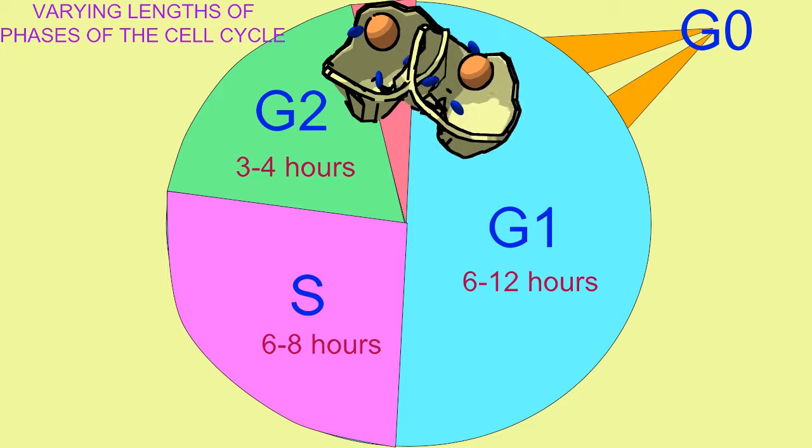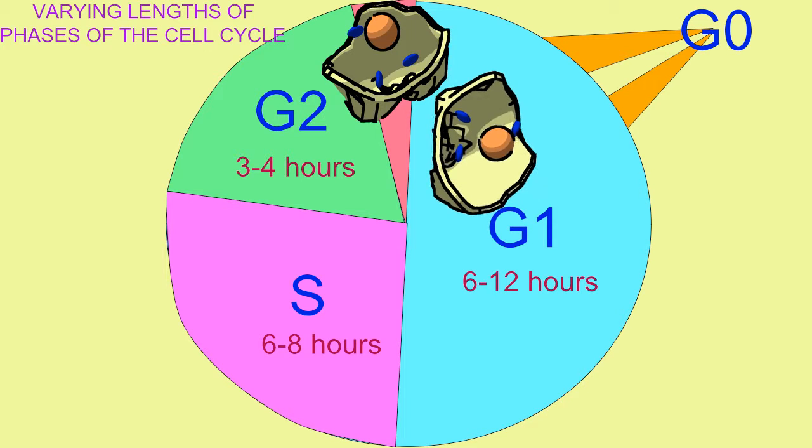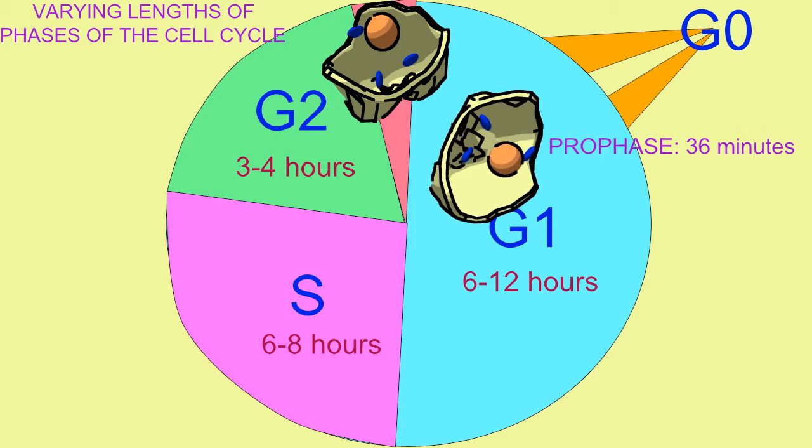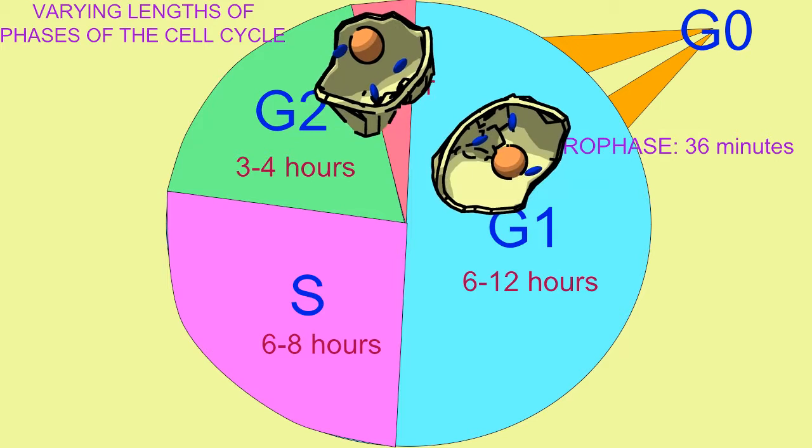In the mitotic stage of cell division, prophase is the longest of the four phases and may last more than a half hour.